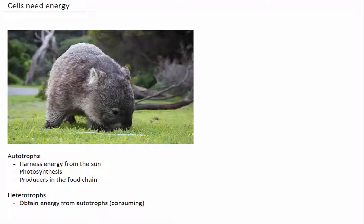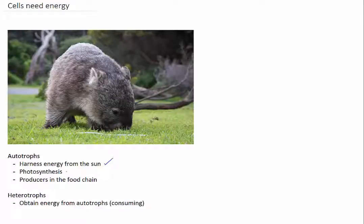All living things depend on energy to survive, and they can obtain this energy from a variety of sources. Some organisms are able to directly harness energy from the sun, and they use this energy to drive the chemical reactions involved in photosynthesis. These are referred to as autotrophs — the producers in a food chain, such as plants on land or algae in the water.